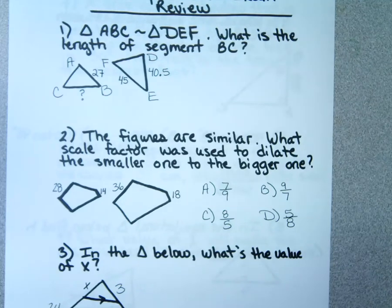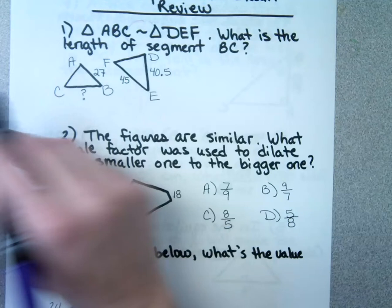If I know these triangles are similar and I want to know the length of segment BC, I'm going to set up a proportion. Whenever things are similar, we want to set up a proportion to figure out whatever we don't know.